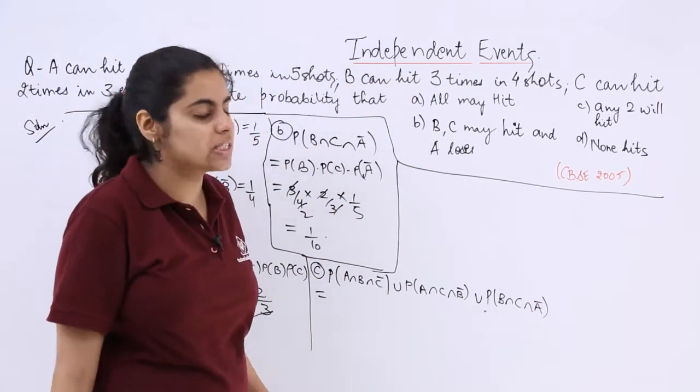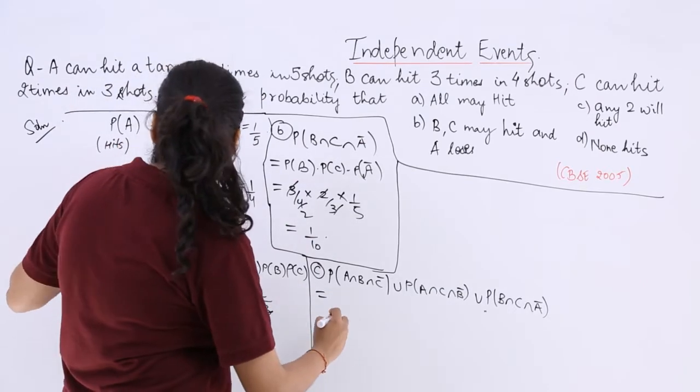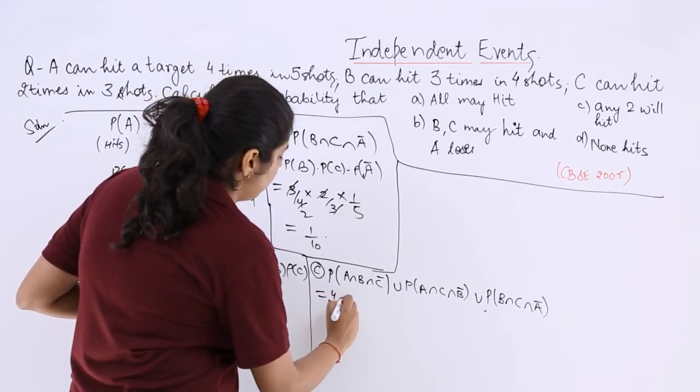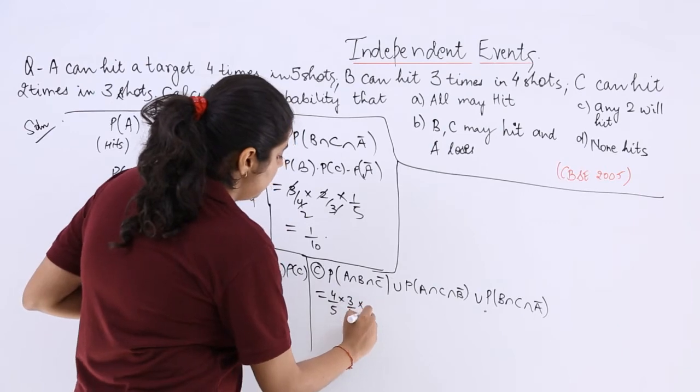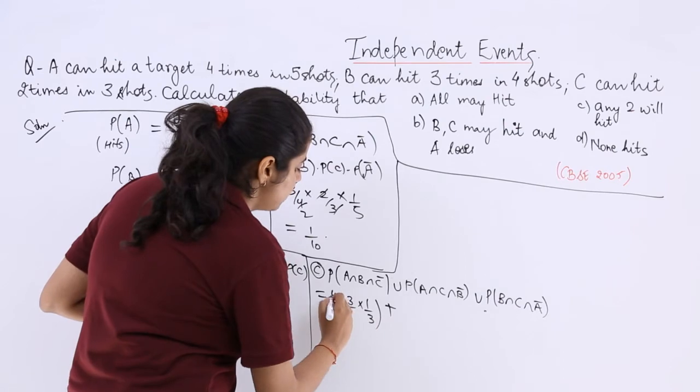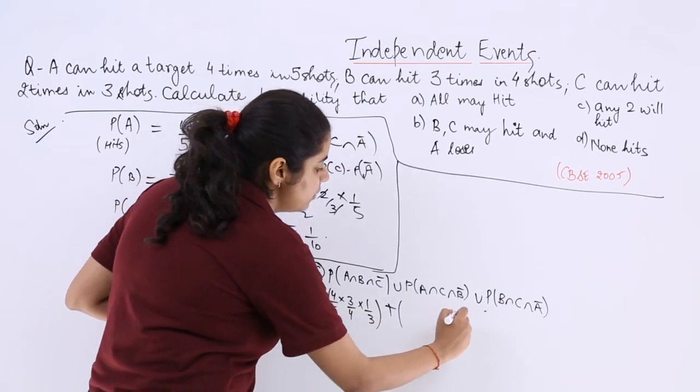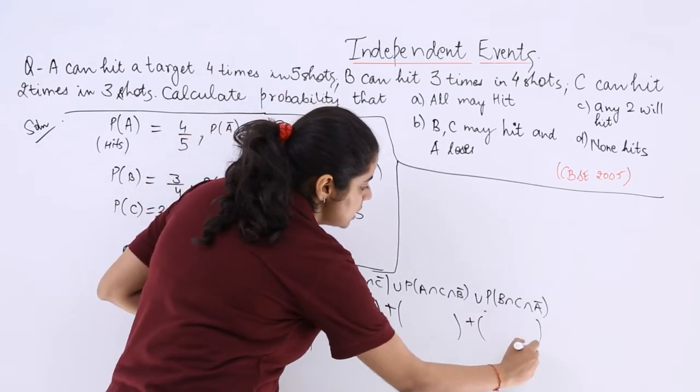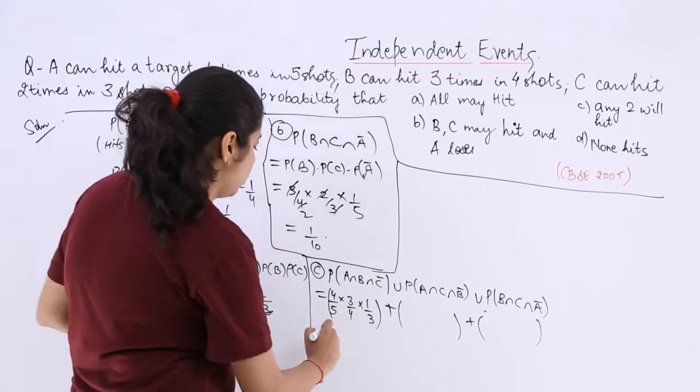Now simply just put the values in and solve. So this is 4/5 multiply by 3/4 multiply by probability of not C which is 1/3 plus, because or means plus, and then putting all the values. So this you have to do on your own. This is homework for you.